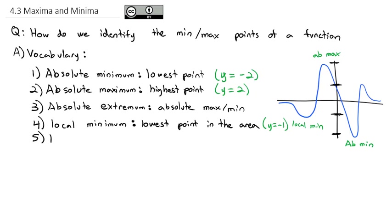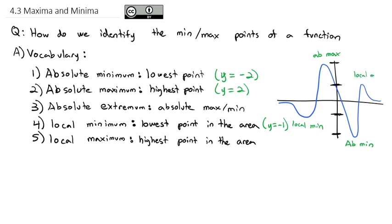Similarly, we can have a local maximum, which is the highest point in the area. The local maximum is the little peak off to the right — the highest mountain in the area, just not the highest mountain overall. That one has a height of 1, so we would say y equals 1.